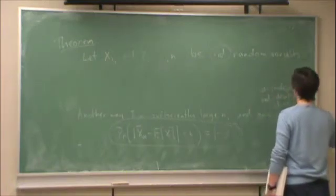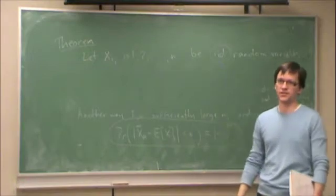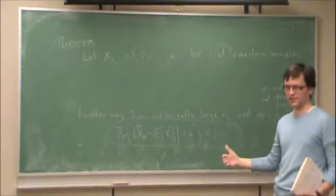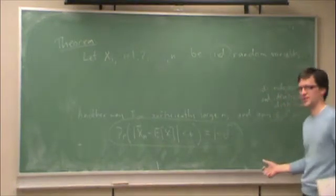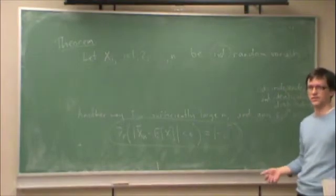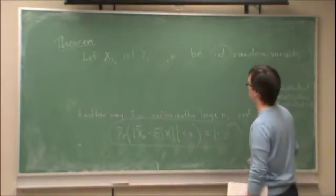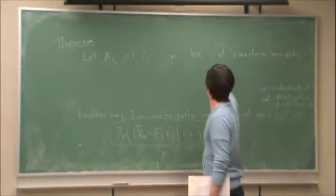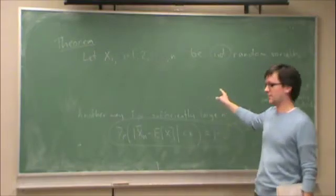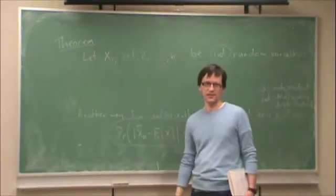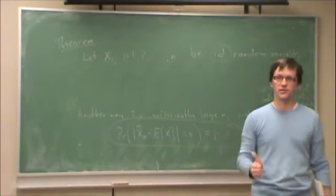So for instance, fair coin tosses are independent and identically distributed. Each coin toss is independent. Each coin toss has the same probability of occurrence of heads and tails. So if XI are independent and identically distributed random variables, then each XI is independent and each XI has the same distribution.